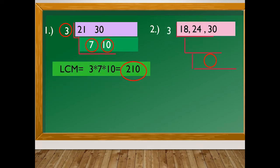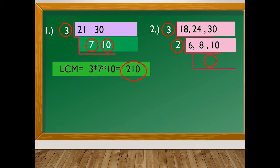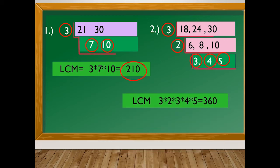For number 2, the common factor for 18, 24, and 30 is 3. So 18 divided by 3 is 6, 24 divided by 3 is 8, and 30 divided by 3 is 10. The common factor for 6, 8, and 10 is 2. So 6 divided by 2 is 3, 8 divided by 2 is 4, and 10 divided by 2 is 5. The least common multiple is 3 times 2 times 3 times 4 times 5, which equals 360.